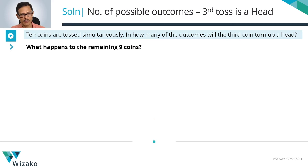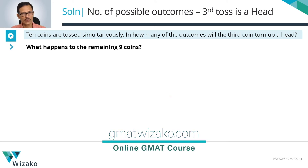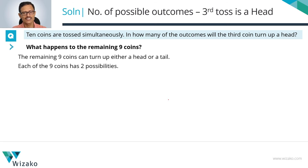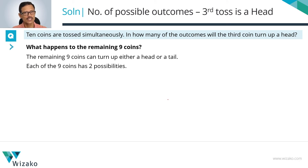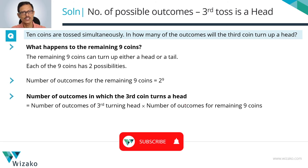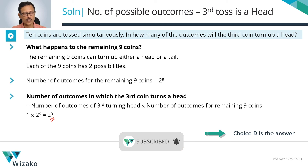To quickly summarize: the third coin has only one possibility — turning out to be a head. Each of the remaining nine coins has two possible outcomes, so all nine together have 2 raised to the power of 9 outcomes. The required number of outcomes when ten coins are tossed simultaneously, where the third one turns out to be a head, is the product of these two parts: one (for the third coin) times 2 raised to the power of 9 (for the remaining nine coins). So the final answer is 2 raised to the power of 9.